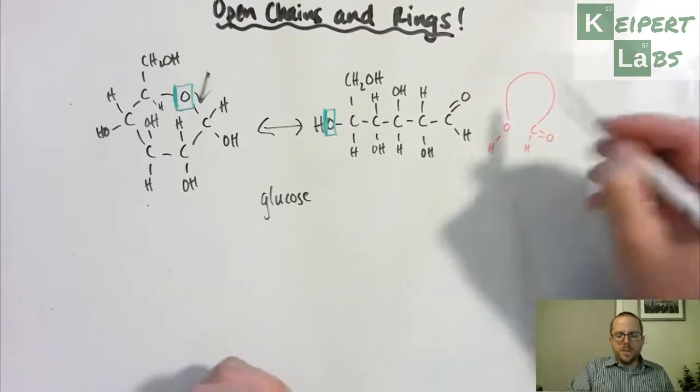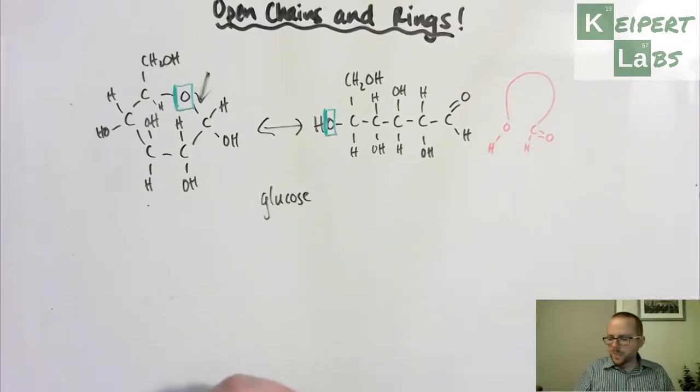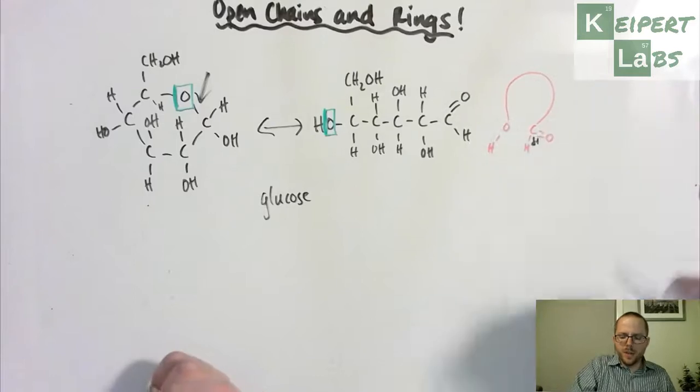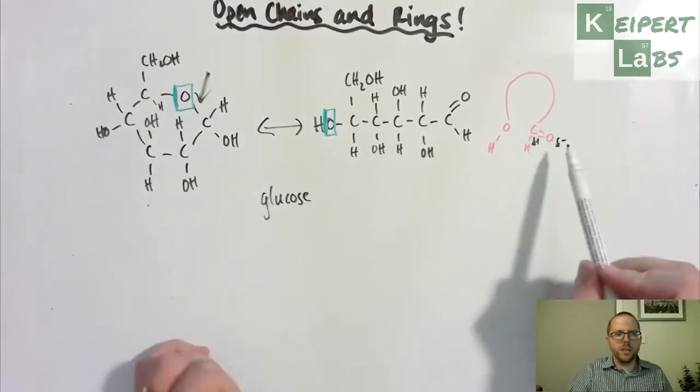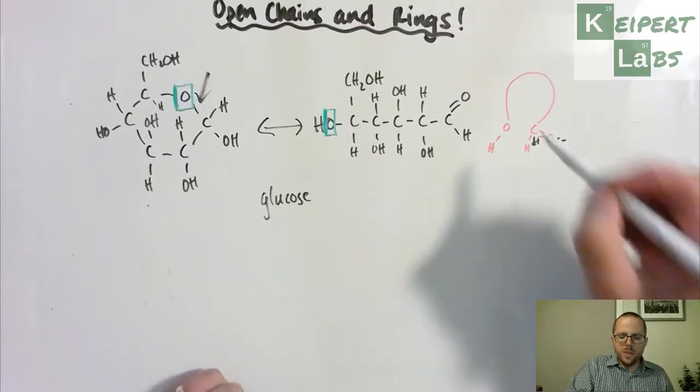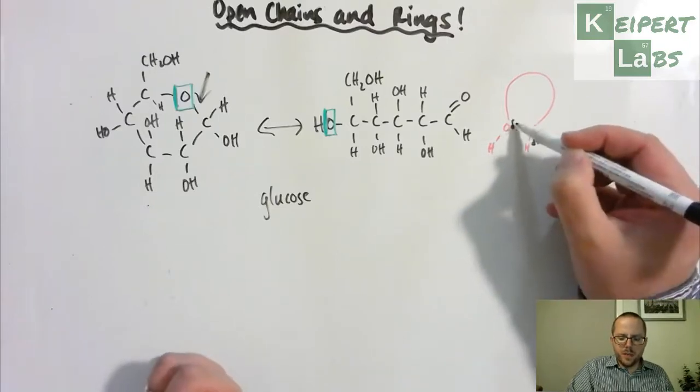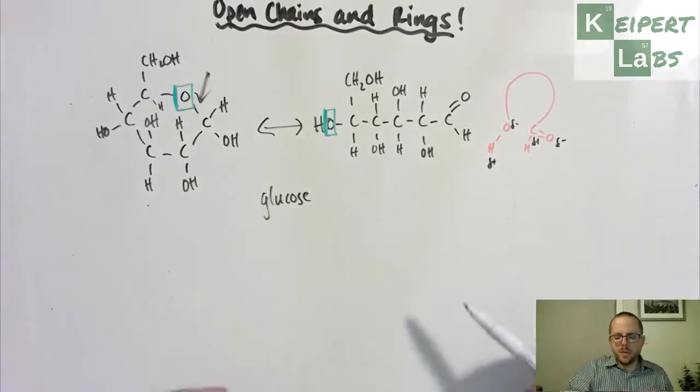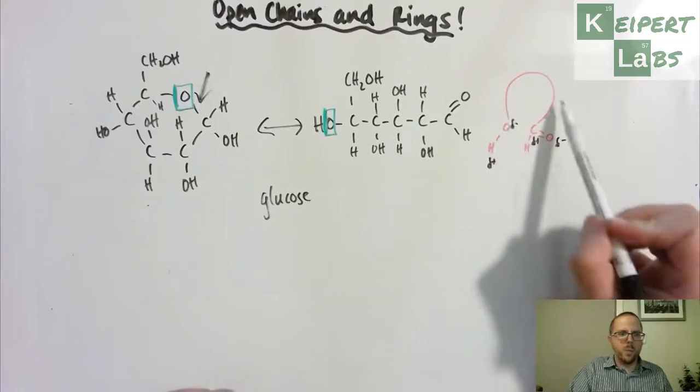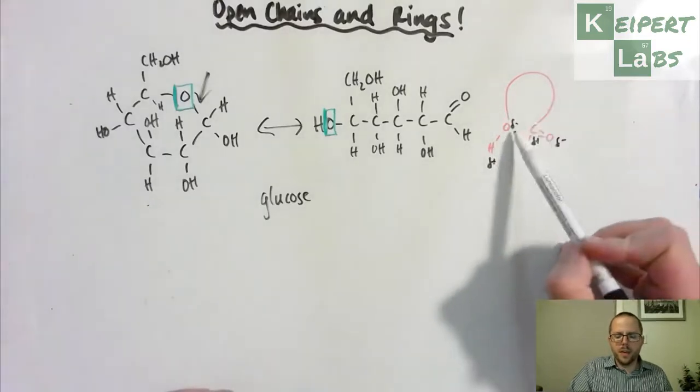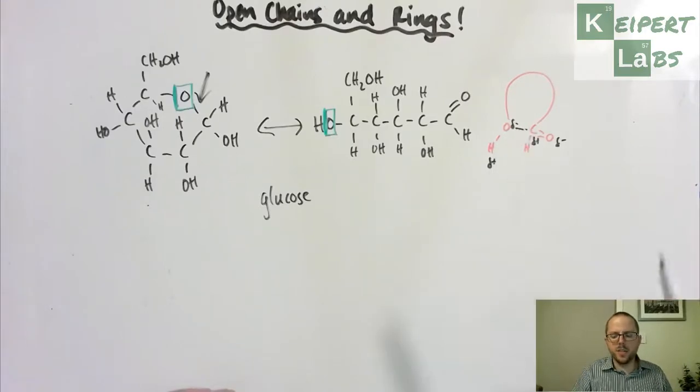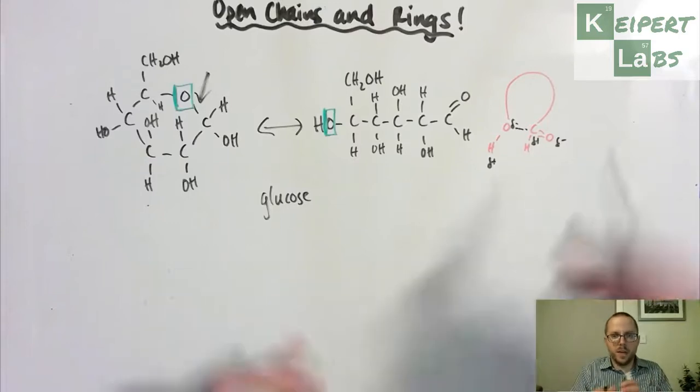And so what happens is this carbon over here has a slight positive charge because of the presence of this electronegative oxygen over here. This oxygen over here we know is delta negative, a slight negative charge because this is a polar bond. So all of a sudden what we have, as this arrangement works itself out, is that we have a slightly negative thing and a positive thing that become quite near to one another. And what happens is that then they actually attract together close enough that these covalent bonds are actually able to rearrange to make that a permanent connection.